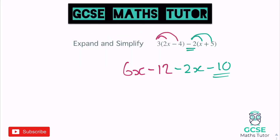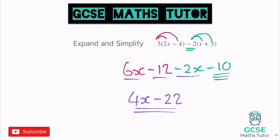Collecting it all together: 6x take away 2x leaves us with 4x. Then negative 12 and negative 10: negative 12 take away 10 is negative 22. So the expanded and simplified answer is 4x minus 22.